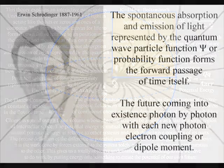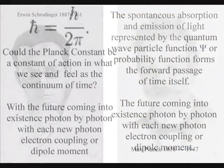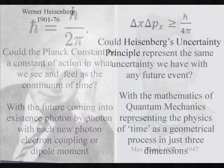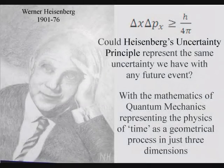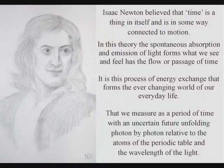In such a theory, the mathematics of quantum mechanics represents the physics of time as a physical process, with classical physics representing processes over a period of time, as in Newton's differential equations.